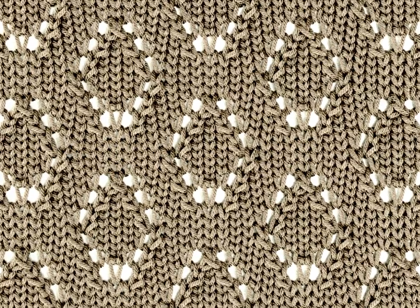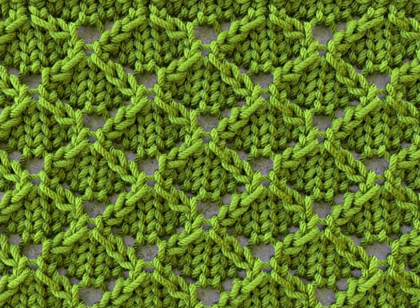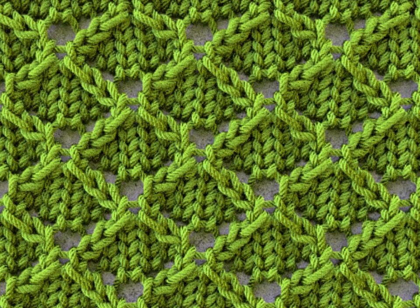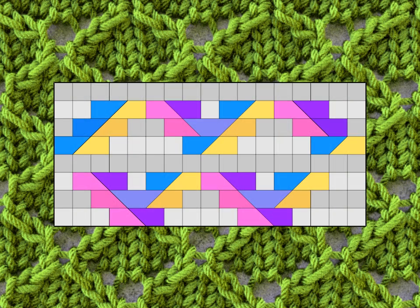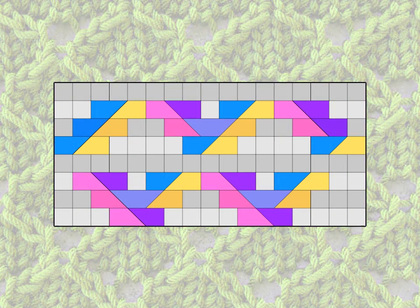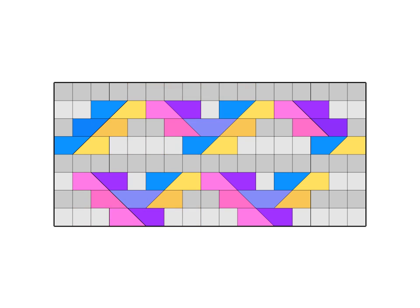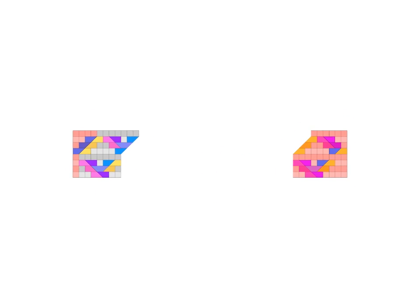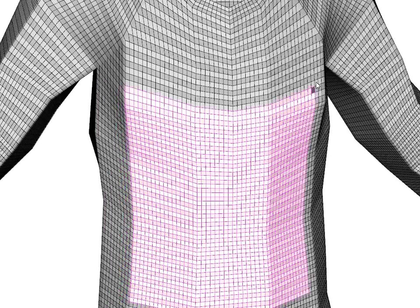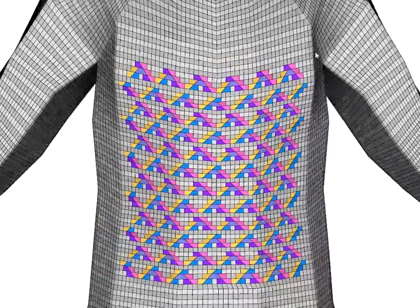Knitted garments typically include repeated patterns. Therefore, we have developed tools for easily specifying and tiling complicated patterns on a garment. In our system, a pattern is a rectangular stitch mesh. Its internal topology and the stitch types of the faces define the knitting pattern. Some faces of the pattern can be tiled and others are placed at the two ends. This way, we can easily generate a larger stitch mesh from this pattern by tiling it as specified by the user. Similarly, we can place the pattern on any stitch mesh by replacing a rectangular region of the stitch mesh with the tiled pattern.